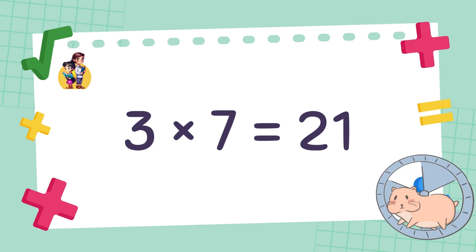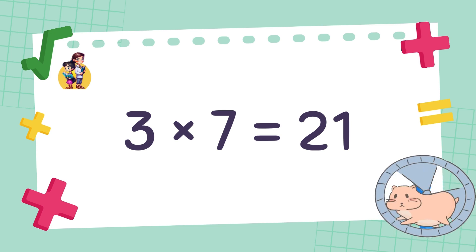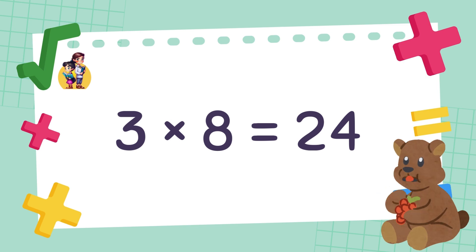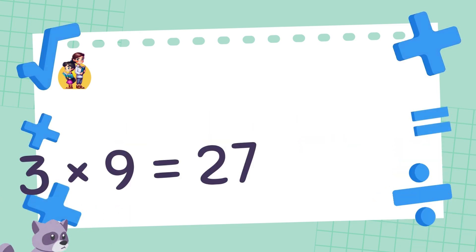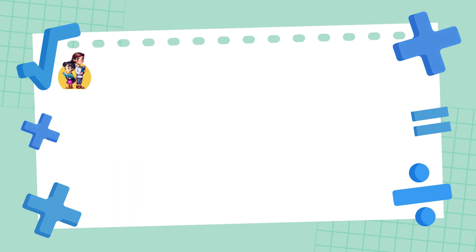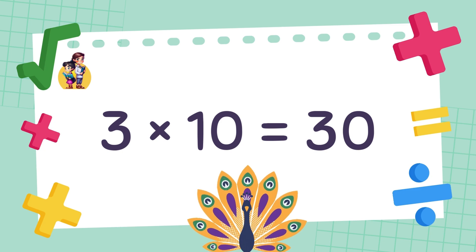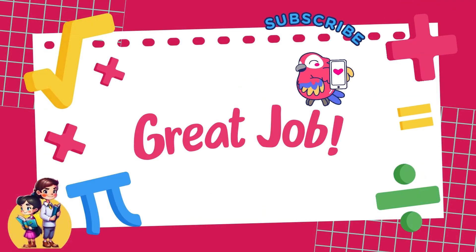3 x 7 is equal to 21. 3 x 8 is equal to 24. 3 x 9 is equal to 27. 3 x 10 is equal to 30. Great job!